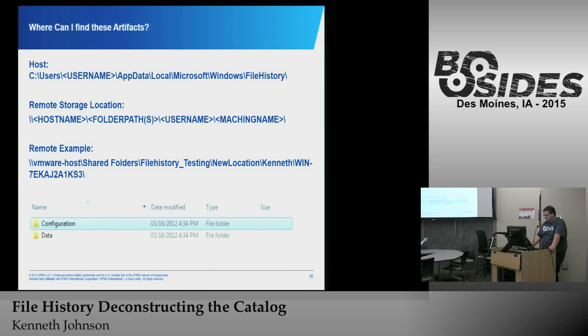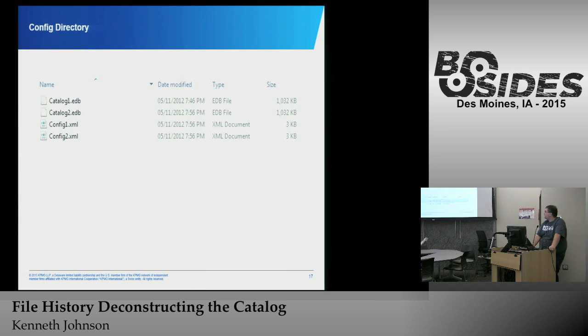Within the configuration data, you have catalog one and catalog two, which are identical backups, and config one and config two, which are also identical.